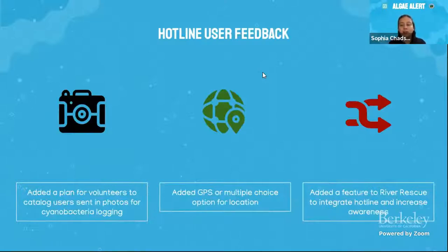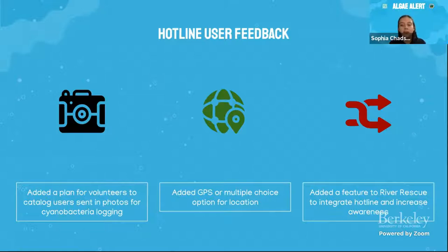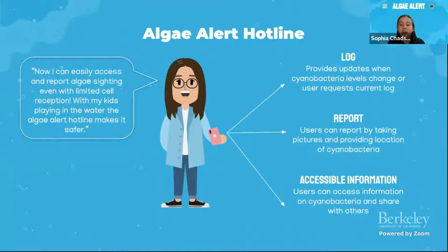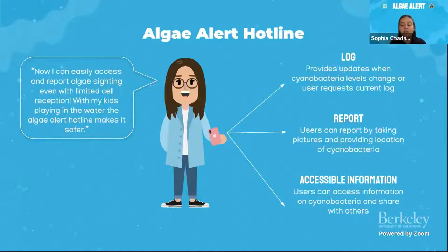From a focus group with members of the Hupa Valley Tribe, we altered our initial hotline prototype. Major suggestions included adding an option to send photos of cyanobacteria so users could easily report sightings and volunteers could catalog them, adding a GPS coordinates option so the location of a sighting would be accurate, and integrating the hotline into our app. Our user persona is Jane, a resident and member of the Hupa Valley Tribe and Julian's mom. She found out about the hotline through her son's app time. Since Julian likes to play in the river in summer, Jane is concerned about cyanobacteria levels. With the hotline, she can easily check levels, receive updates when levels change, report sightings through a few easy messages, and access easy-to-read infographics on cyanobacteria.